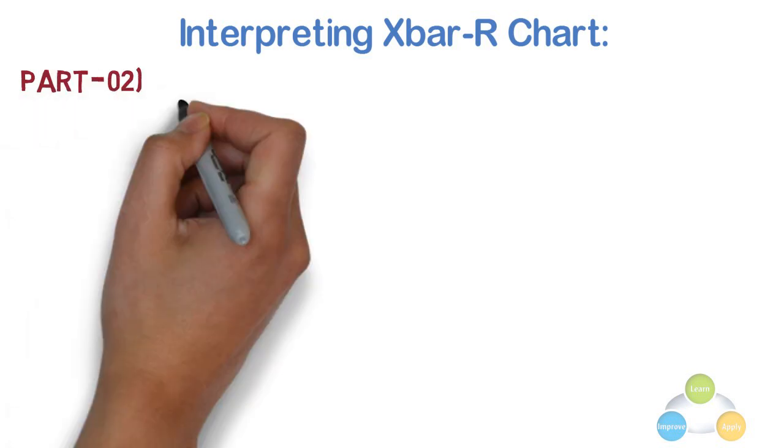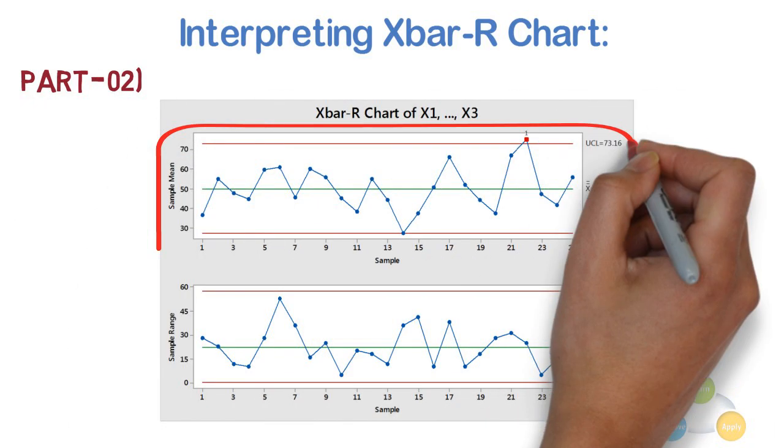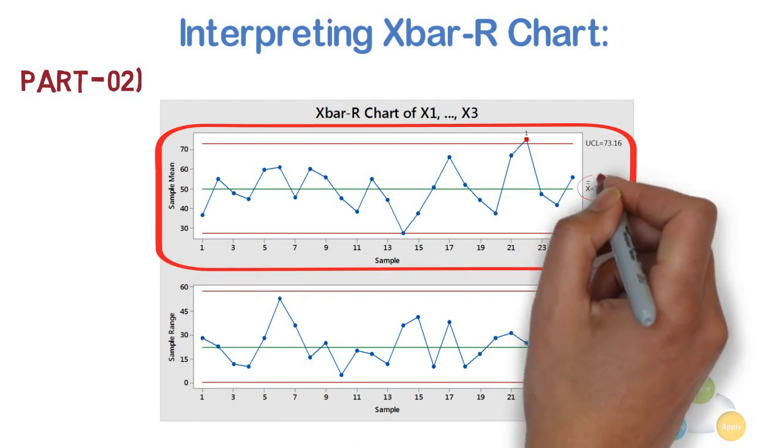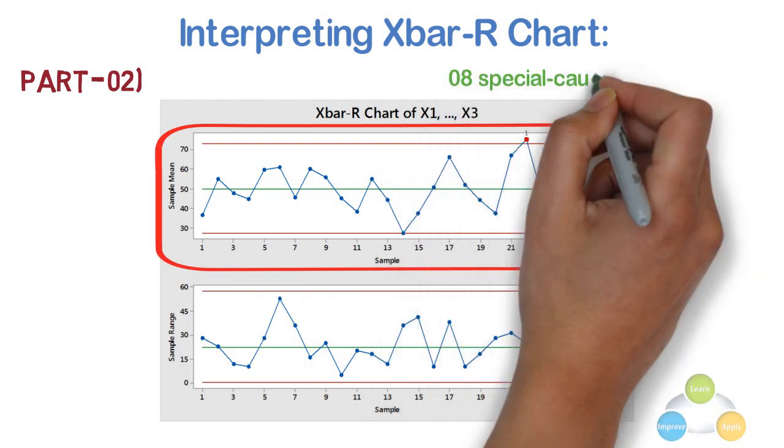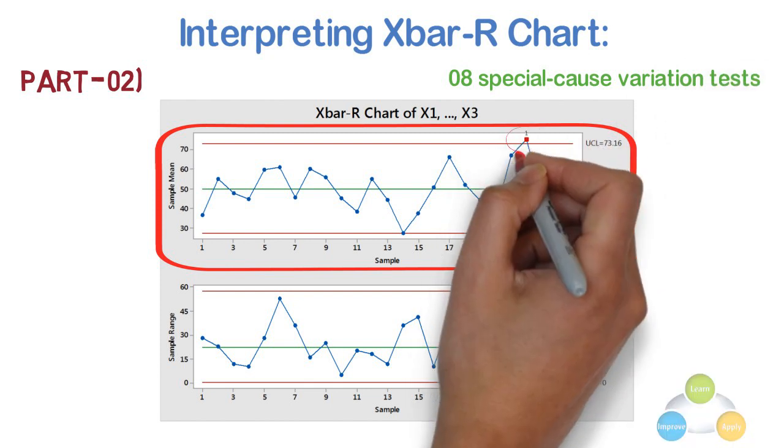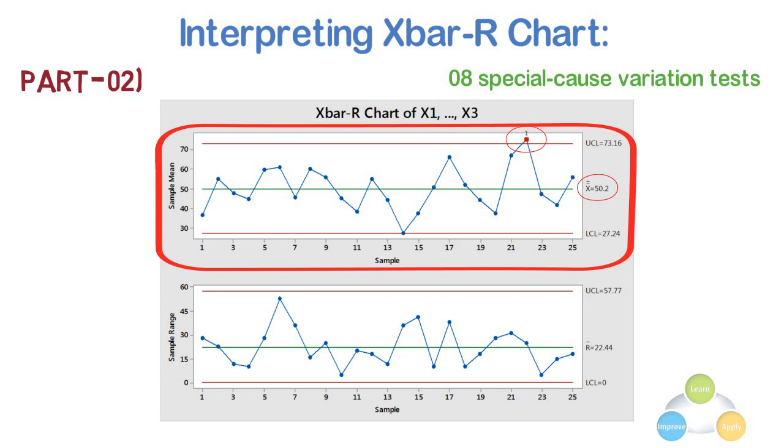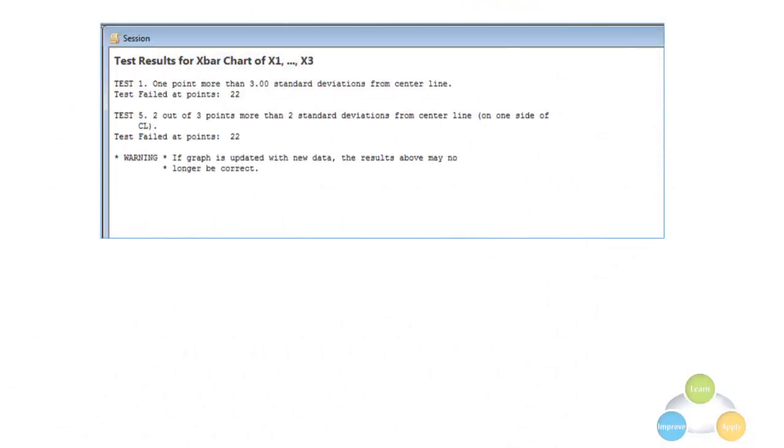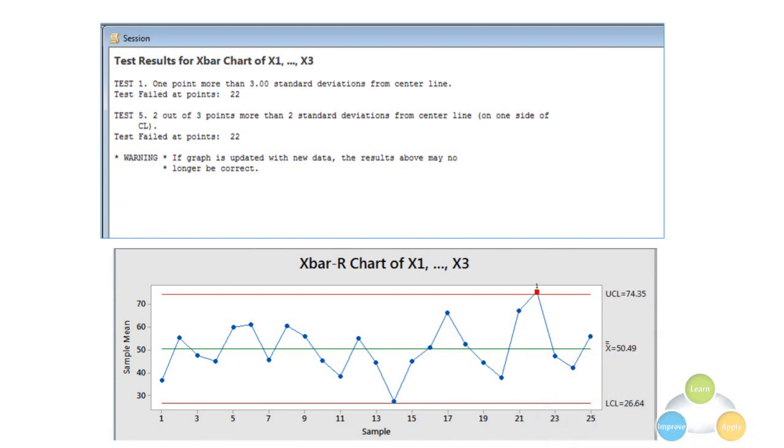Part 2. Now, we can look at the X bar chart to assess whether the process center is in control. Minitab conducts up to 8 special cause variation tests for the X bar chart and marks problem observations with a red symbol and the number of failed tests. The graph tells you one observation that failed test. The Minitab session window tells you why each point was flagged. Observation number 22 failed test 1, which tests for points more than 3 standard deviations from the center line, the strongest evidence that a process is out of control.